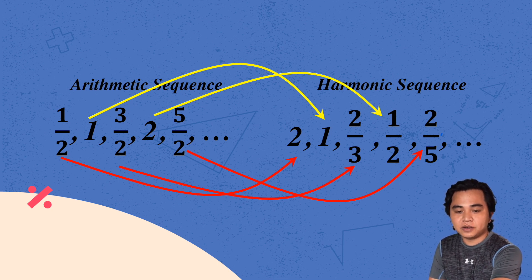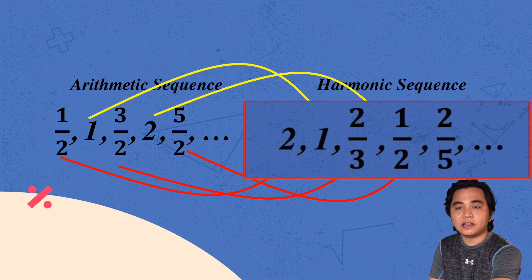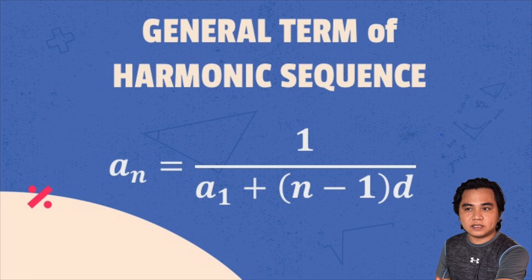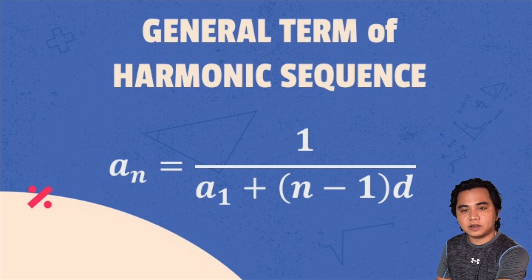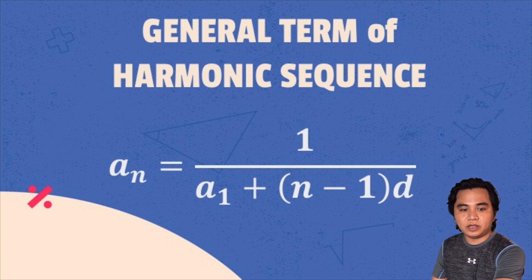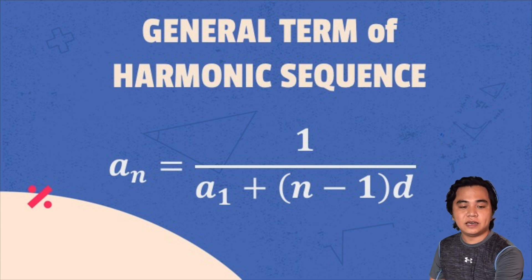So therefore, the harmonic sequence here is 2, 1, 2/3, 1/2, then 2/5. Since harmonic sequence is just the reciprocal of an arithmetic sequence, we can use the formula: a sub n equals 1 over (a sub 1 plus (n minus 1) times d).